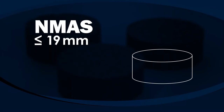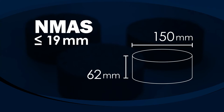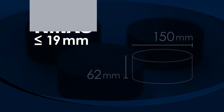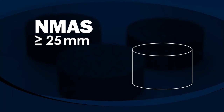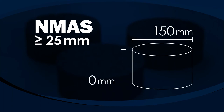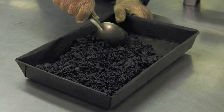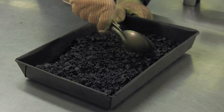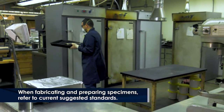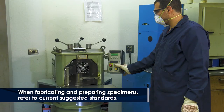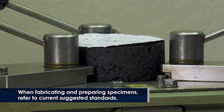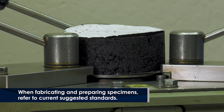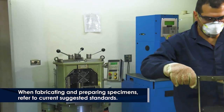For mixtures with a nominal maximum aggregate size of 19 millimeter or smaller, the specimens should be 150 mm in diameter by 62 mm thick. For mixtures with a nominal maximum aggregate size of 25 millimeter or larger, specimens should be 150 mm in diameter by 95 mm thick. For laboratory-prepared specimens, short-term condition the asphalt mixture according to AASHTO R-30 and fabricate three 150 mm diameter specimens at the target air void and target height using a Superpave gyratory compactor or SGC.